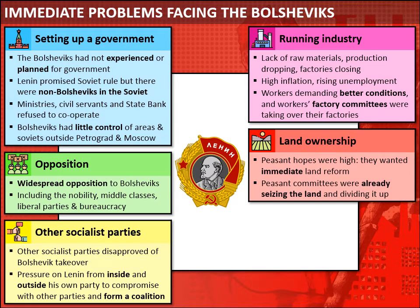In the countryside the Bolsheviks faced the question of land ownership. Peasant hopes were incredibly high — they wanted immediate land reform. In fact, since the summer of 1917 peasant committees had already begun seizing land from the nobles and dividing it up amongst peasant households, and they expected the Bolshevik government to approve or authorise this takeover.